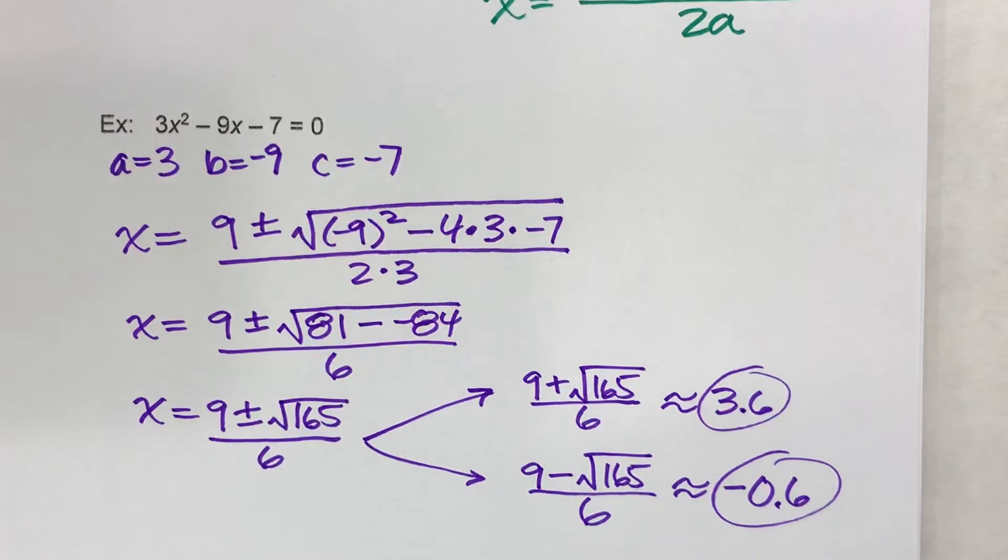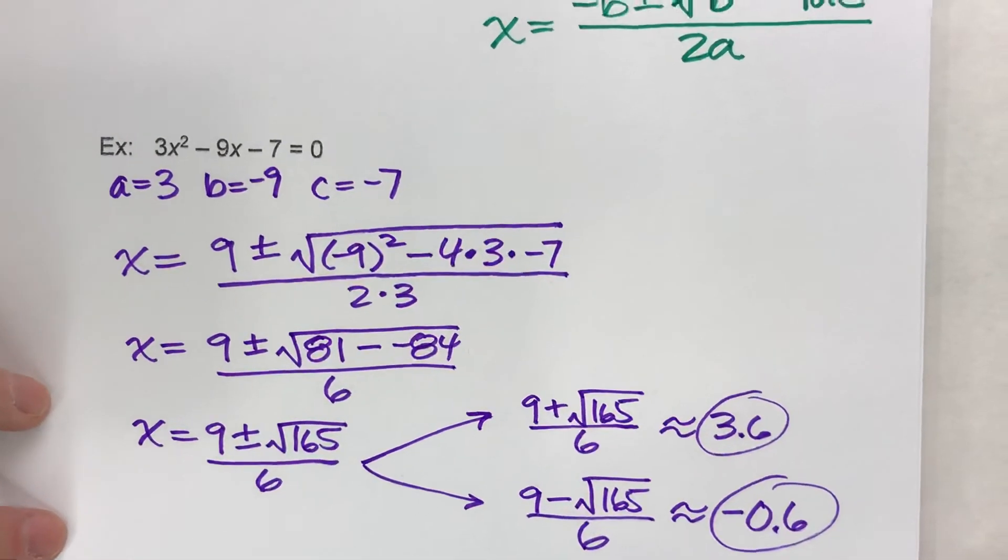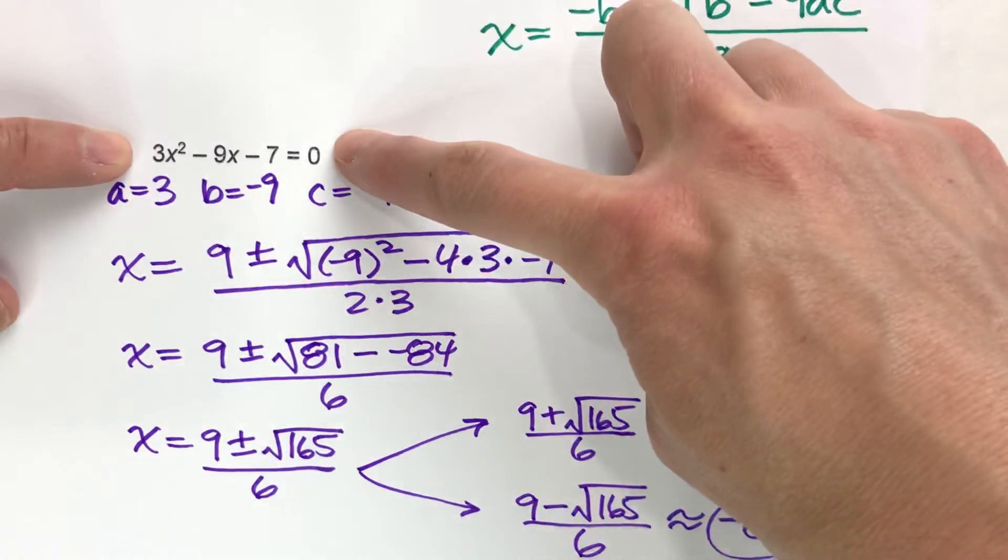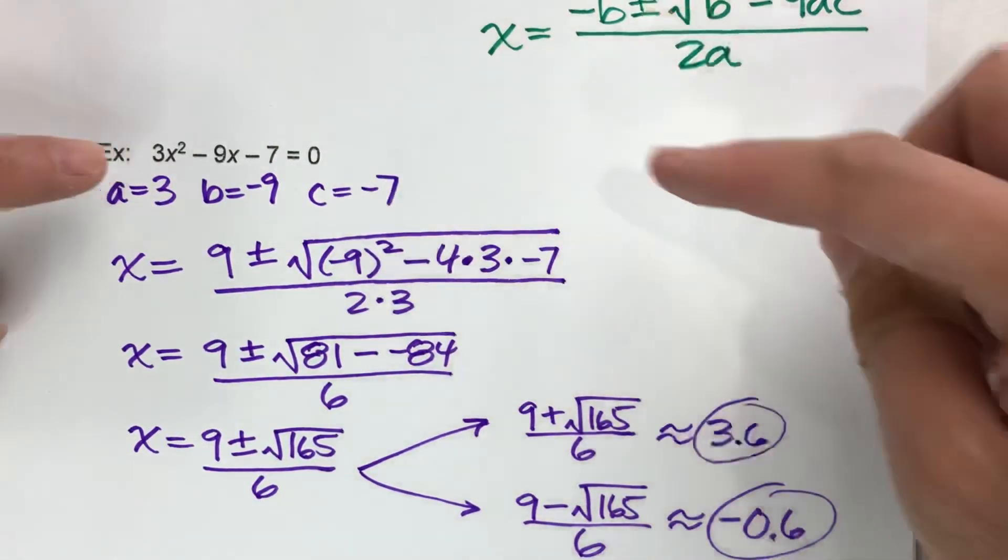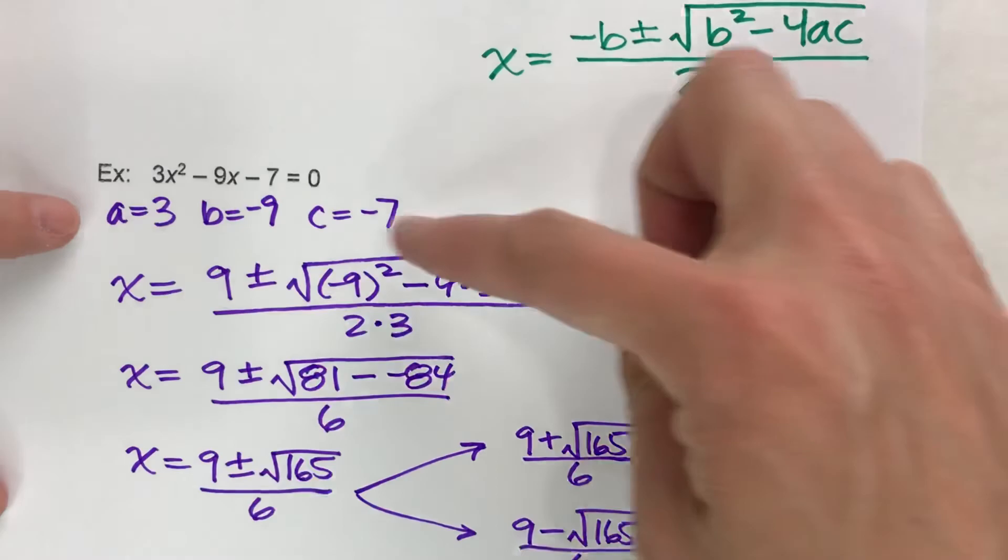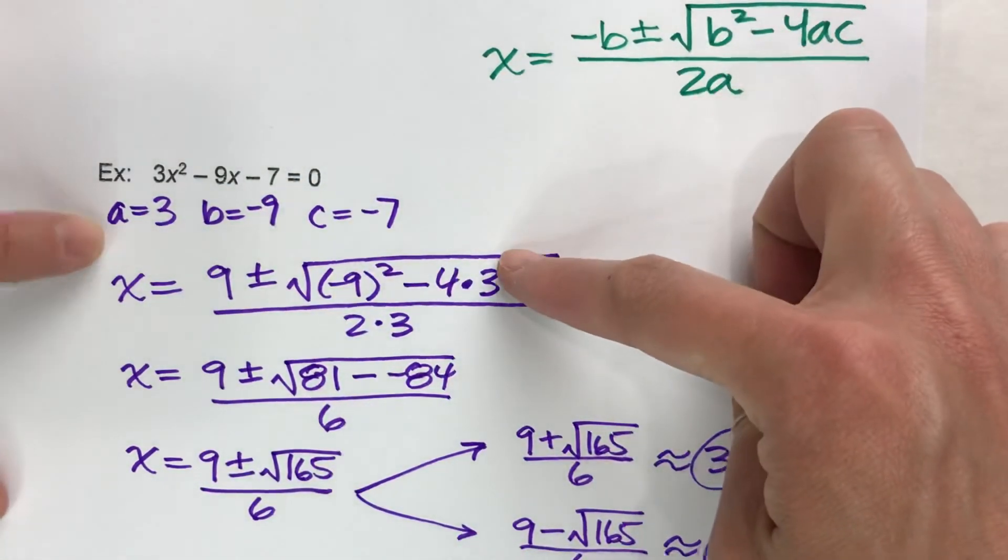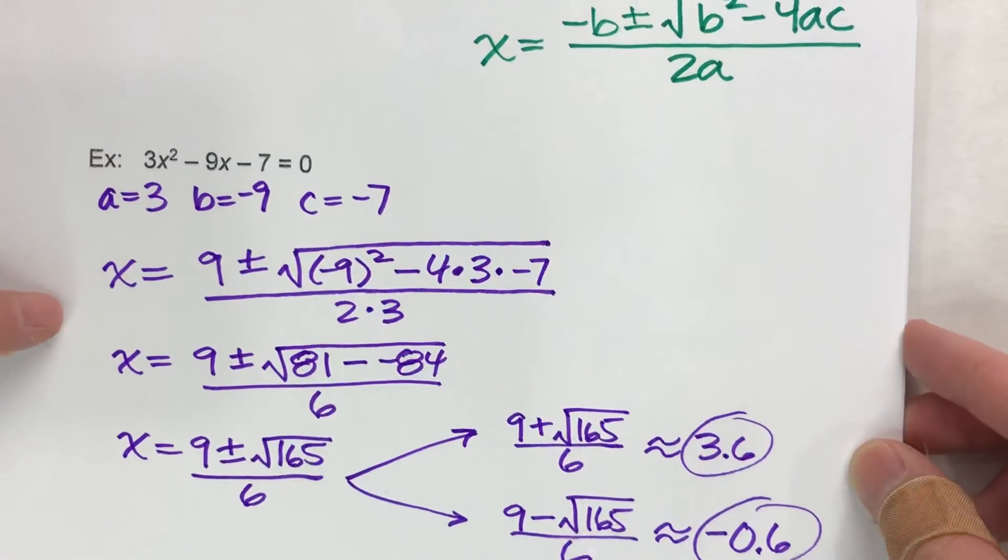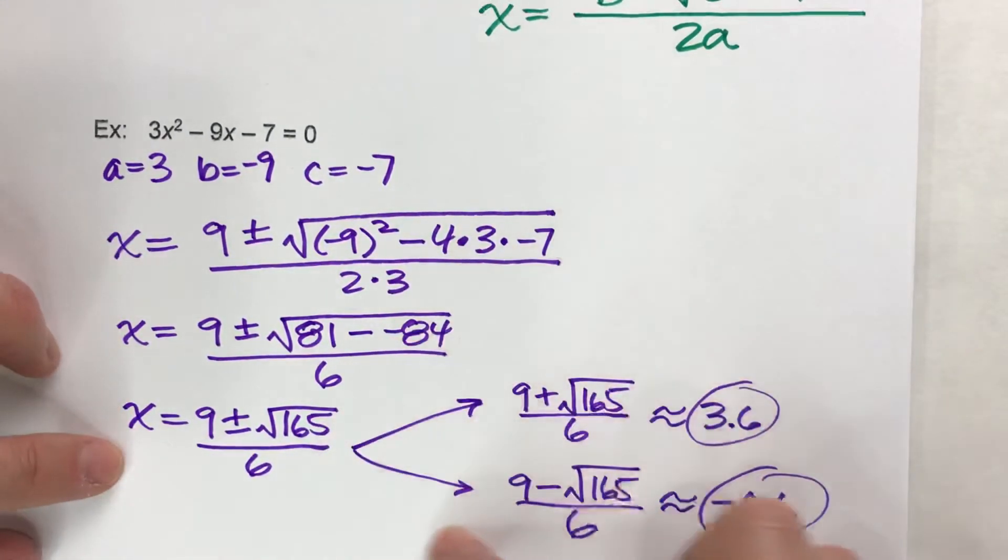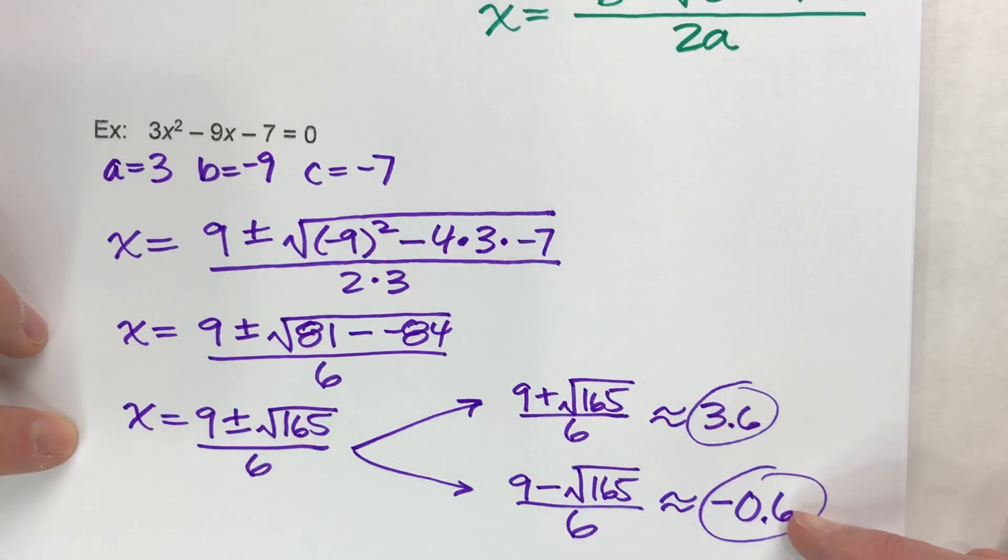There it is. So, when you're doing these, first off, always make sure your equation is equal to 0. And then pay attention to the positives and negatives for a, b, and c. But after that, plug it into your quadratic formula and then do the order of operations. And your calculator will do the heavy work.